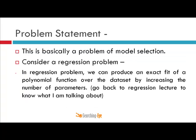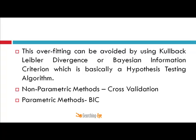For BIC, the problem statement is basically model selection. Consider a regression problem: we can produce an exact fit of a polynomial function over the dataset by increasing the number of parameters, but as we increase parameters, overfitting also increases. Our task is to determine the appropriate number of parameters. This can be done via Kullback-Leibler divergence or Bayesian Information Criterion, with BIC being more robust. Essentially, the problem is hypothesis testing — which hypothesis to choose.